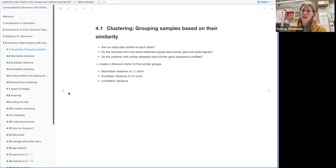So the first part about clustering. Clustering means that you're grouping your samples based on their similarities. And the main questions that you have when you're making clusters are: are replicants similar to each other? Do the samples from the same treatment group have similar genome-wide signals? Because it's about genomes here. Do the patients with similar diseases have similar gene expression profiles? And to answer these questions, we have to create a distance metric to find similar groups. And this book talks about three distance metrics: the Manhattan distance, Euclidean distance, and the correlation distance.